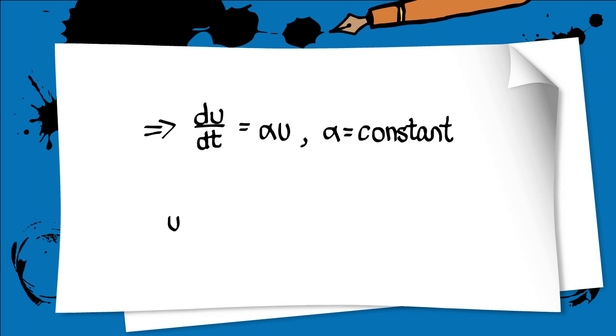We can solve this differential equation to get u(t) equals u0 times e to the alpha t, where u0 is the initial number of bacteria.